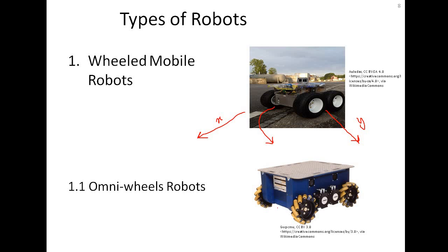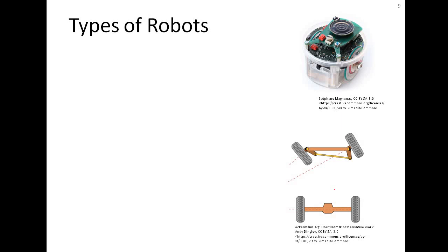With omni wheel robots, if it's traveling in one direction and you want it to move instantaneously in another direction, it can do so by just changing the relative speed of the wheels — it will start moving in the new direction without turning or taking extra time.